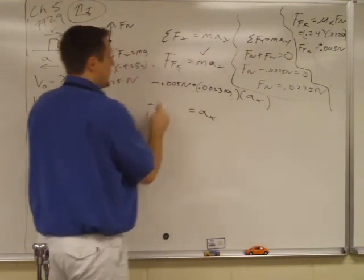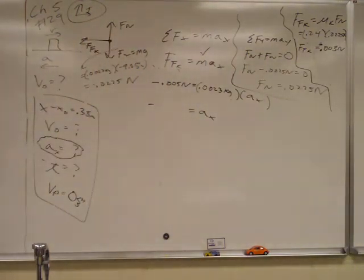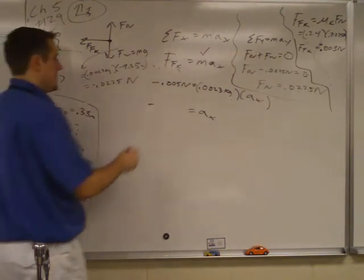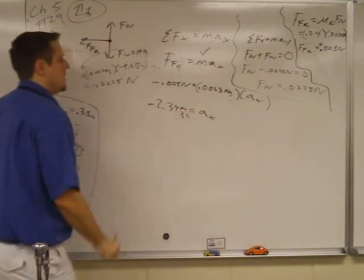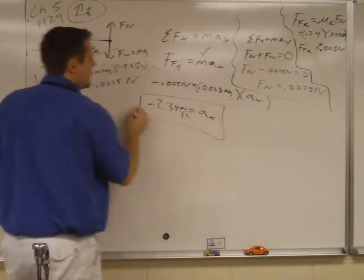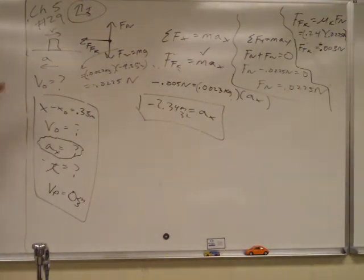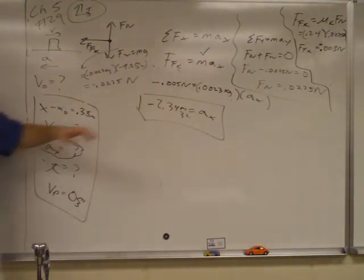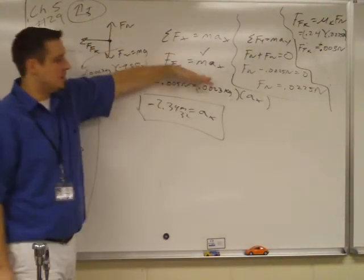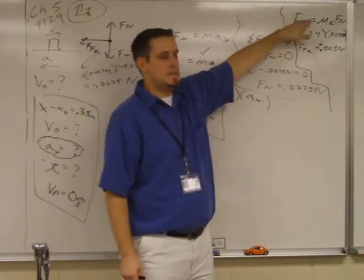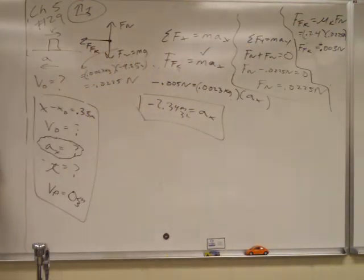So we're going to get negative something. What's 0.005 divided by 0.0023? 2.34 meters per second squared. All right. I'm going to stop there for a minute and take questions before I explain the last step. If you got lost in something worse than the Y, let me know. If you got lost in something worse than the X, let me know. If you didn't know where this came from or where we got numbers from, please ask.